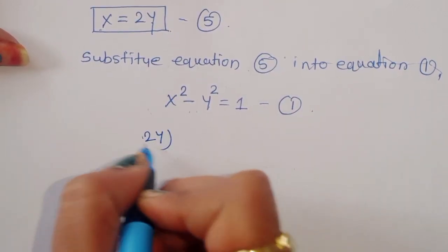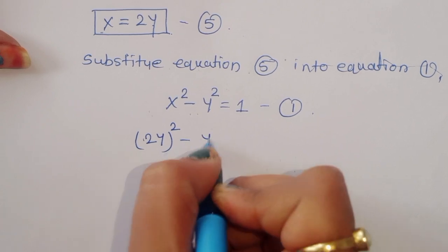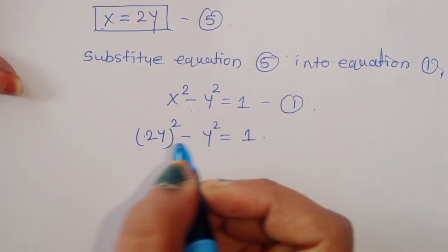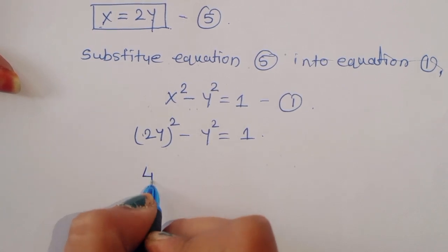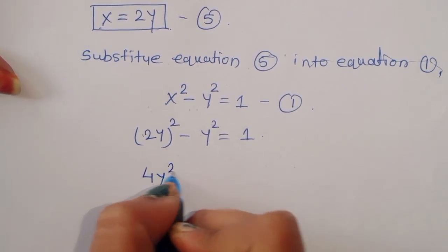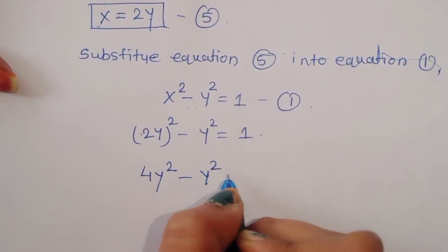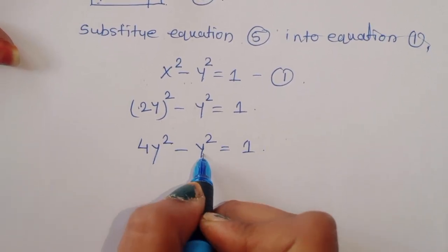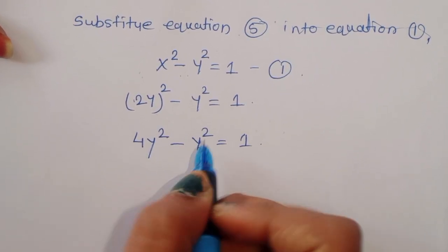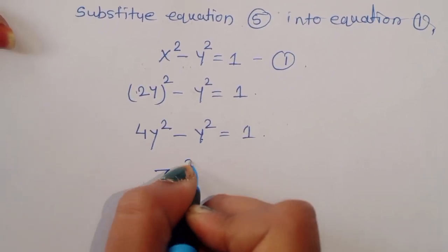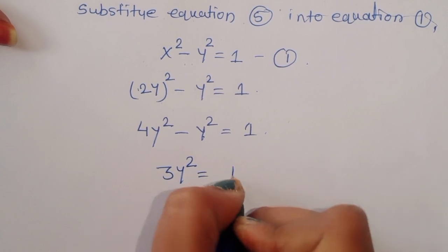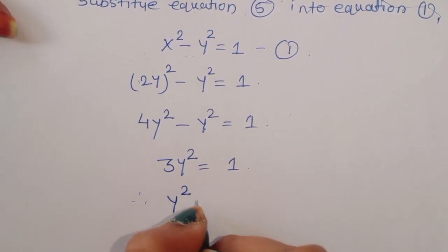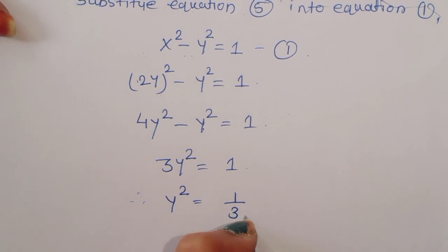Substituting x equals 2y into equation 1: (2y) squared minus y squared equals 1, which gives 4y squared minus y squared equals 1. We can write 3y squared equals 1, therefore y squared equals 1 by 3.